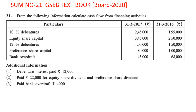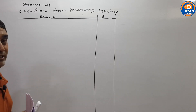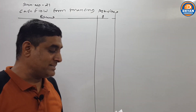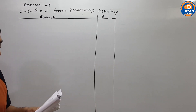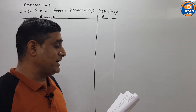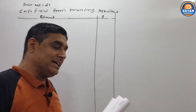Dear students, now we are taking sum number 21 of GACB textbook — jo bachcho Gujarat Board 2020 mein aa chuka hai — jiske andar hamen financing activities find karne hain. 2 saal ka information available hai: 17 aur 16 — debenture, equity capital, preference capital, and bank overdraft. Niche additional information mein 3 points hain. Yeh bahut pyaara aur aasaan question hai. Hamen financing activities ka use karna hai. Paise aaye to plus mein likhna hai, jaaye to minus mein.